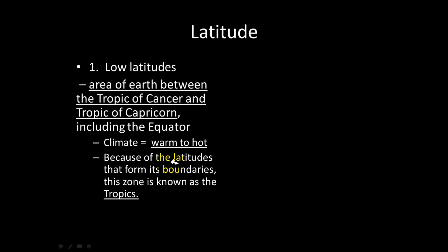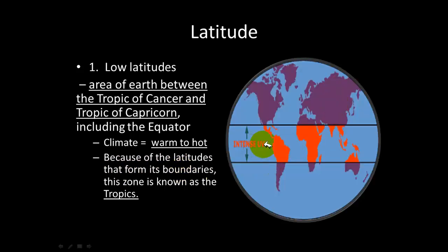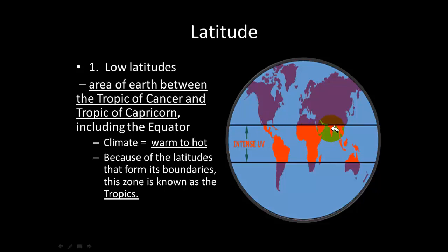Because it is closest to the equator, and the equator is the part of the earth closest to the sun, this is the warmest part of the earth. This zone is called the tropics. The low latitudes encompass the equator and include some of the warmest parts of the earth — the jungles of South and Central America, the jungles and deserts in Africa and Sub-Saharan Africa, the jungles in Southeast Asia, and the deserts in Australia.